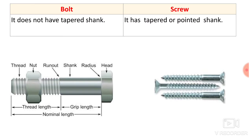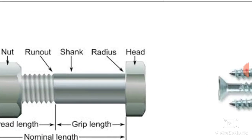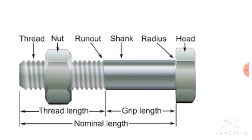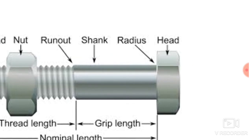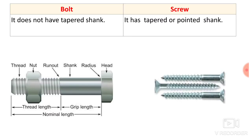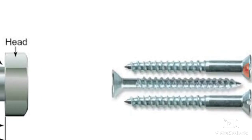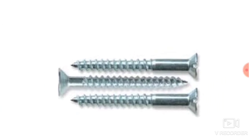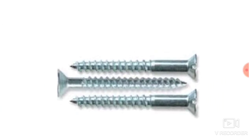Next difference: a bolt does not have a tapered shank. Looking at the nomenclature of the bolt, you can see the threaded portion, the nut over the bolt, thread length, shank, radius, and head — the shank does not have any taper. Whereas a screw has a tapered or pointed shank. Although it may not always be visible in the image, most screws have a tapered shank.